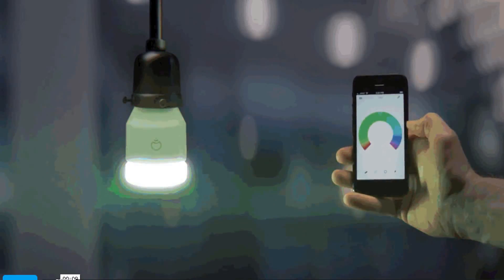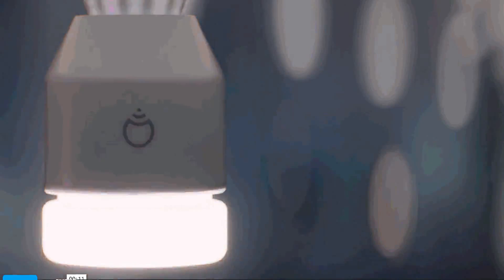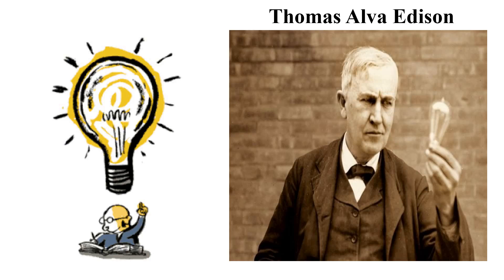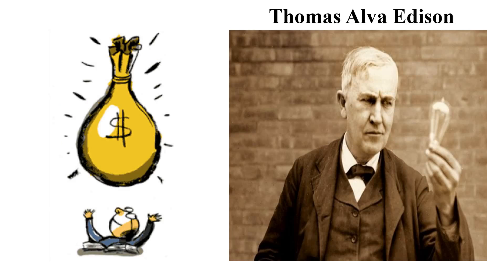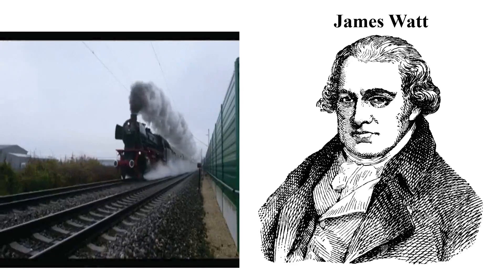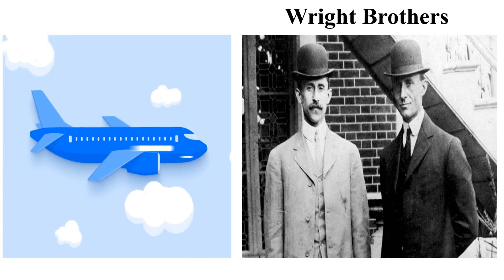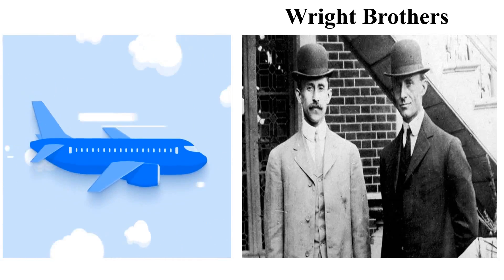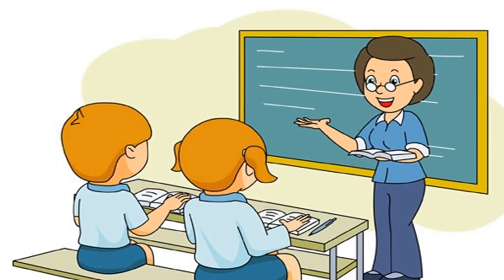Students, we live in an age where we're surrounded with inventions and technology. But do you know who made these inventions? These are our scientists. Like, the electric bulb is invented by Thomas Alva Edison. The steam engine is invented by James Watt. And the aeroplane is invented by the Wright Brothers. In this way, not only things but also places are discovered.